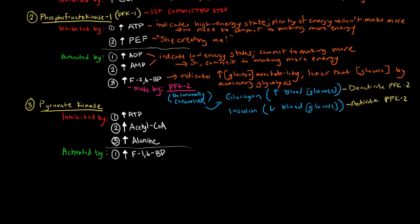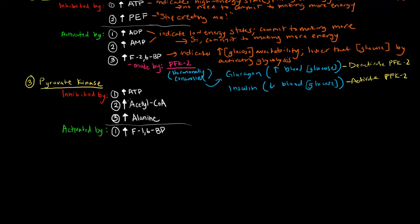Now let's get into pyruvate kinase. Pyruvate kinase has three different allosteric inhibitors. The first is high levels of ATP — same reasoning as above: it indicates plenty of energy, and if there's plenty of energy around, there's no need to keep creating more. Pyruvate kinase makes that last bit of ATP in glycolysis, so we don't want it active if we already have plenty of ATP around.